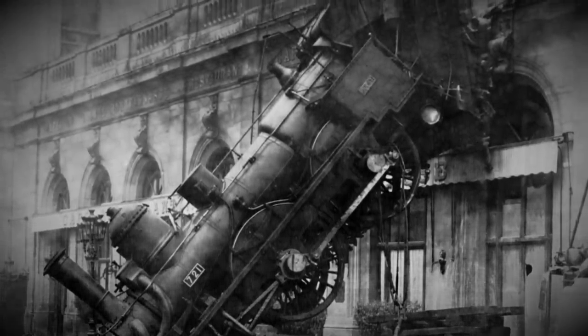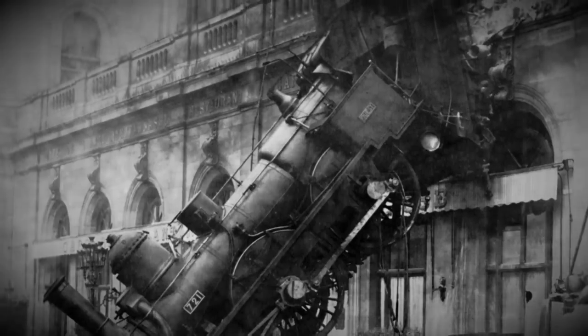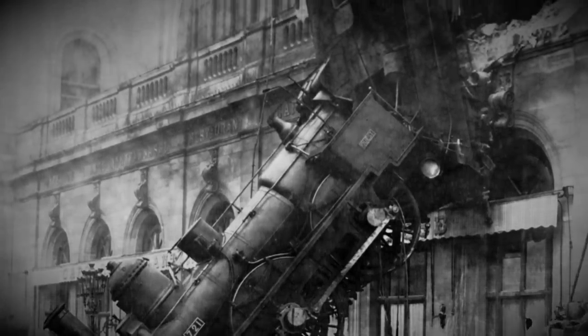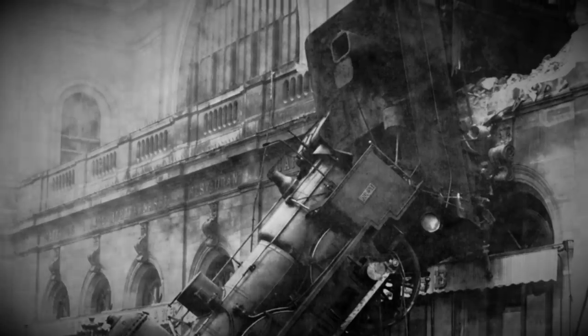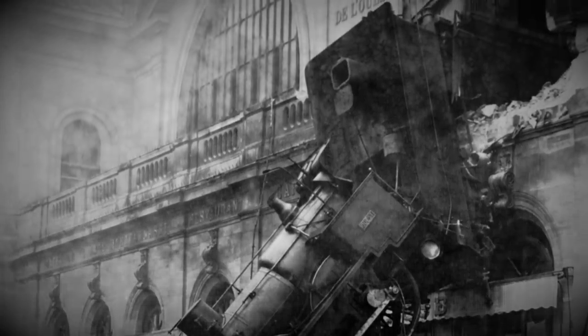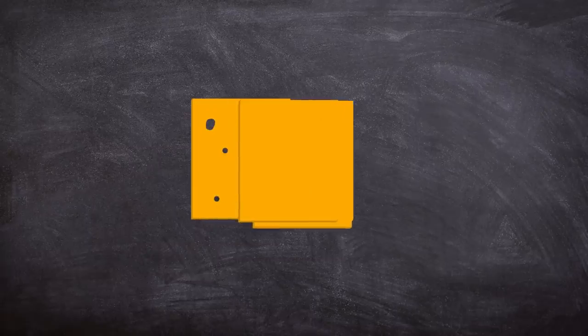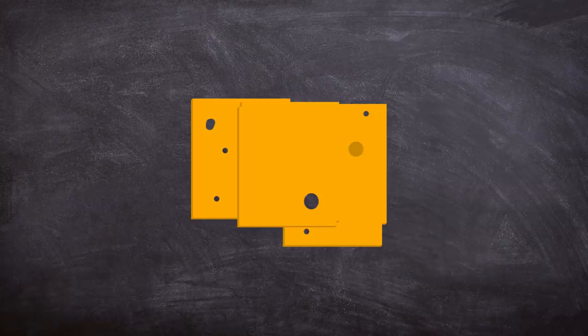The Swiss cheese model likens human systems to multiple slices of cheese stacked side by side, in which the risk of threat becoming a reality is mitigated by the differing layers and types of defenses layered behind each other. However, when multiple lapses in safety procedures and human factors line up those holes, it results in a bigger failure of the systems placed to prevent disaster.